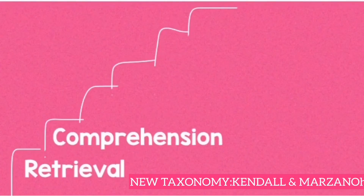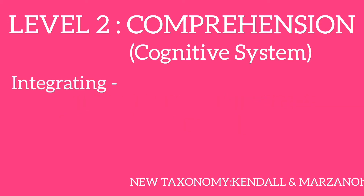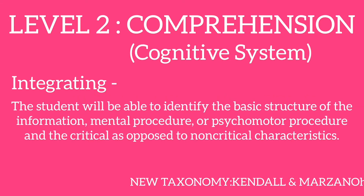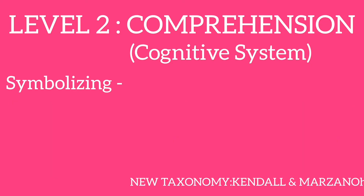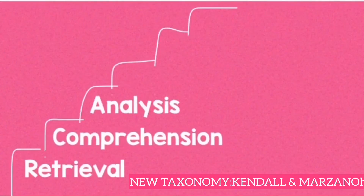The second level of the cognitive system is comprehension. It involves two related processes: integrating and symbolizing. Integrating is when the student will be able to identify the basic structure of the information, mental procedure, or psychomotor procedure, and the critical as opposed to non-critical characteristics. Symbolizing is when the student will be able to construct an accurate symbolic representation of the information, mental procedure, or psychomotor procedure, differentiating critical and non-critical elements.